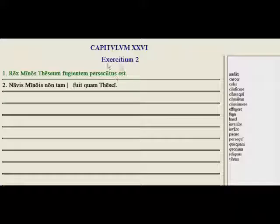So persecutus est. Deponent, right? So we're using our perfect passive form. From persequi, persecutus sum. Navis Minous non tam blank fuit quam Tesei. Here we just had practice last exercise with this form of the adjective: caler, caleris, calere. And we're matching it up with navis, which is feminine. So the correct form is caleris, the second form.